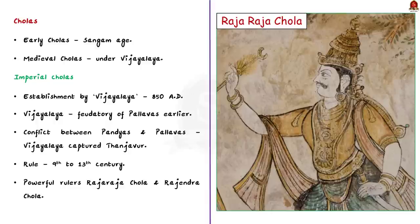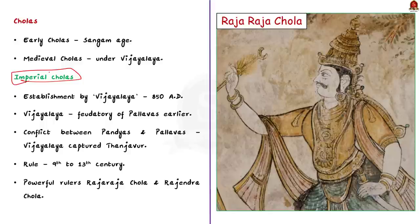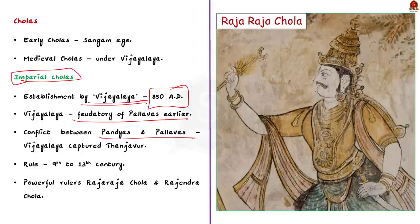In this context, let us learn about Chola architecture. The history of Cholas falls into two periods: the early Cholas of the Sangam age and the rise of the medieval Cholas under Vijayalaya. The medieval Chola period is called the Imperial Chola dynasty. The Imperial Chola kingdom was established by Vijayalaya around 850 AD. Before establishing his own kingdom, Vijayalaya was a feudatory of the Pallavas. Vijayalaya took an opportunity arising out of the conflict between the Pandyas and Pallavas, defeated the Pallavas, and captured Tanjavur, establishing the Imperial Chola dynasty in the 9th century.